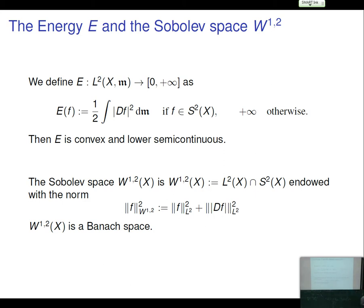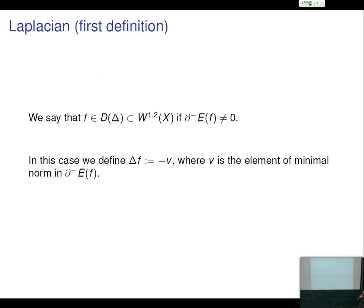We have the Sobolev space, the energy, and now a Laplacian. Convex lower semi-continuous functions on Hilbert spaces have subdifferentials. Taking the Cheeger energy as a convex function on L², I say a function f has a Laplacian if the subdifferential of E at f is non-empty, and I define Δf as the opposite of the element of minimal norm in the subdifferential.